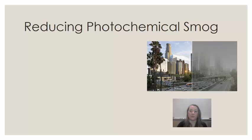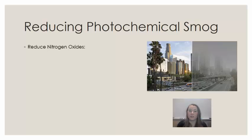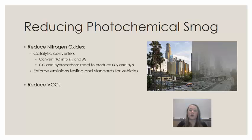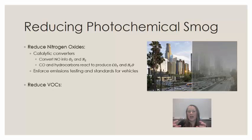There are ways to reduce photochemical smog. The first is to reduce nitrogen oxides, and the second is to reduce VOCs — the two key ingredients. To reduce nitrogen oxides, we can use catalytic converters on cars. Catalytic converters are designed to reduce exhaust gases by converting nitrogen oxides in the exhaust into oxygen and nitrogen gas through a series of reactions, reducing the pollutants emitted from the tailpipe.